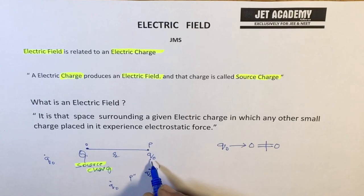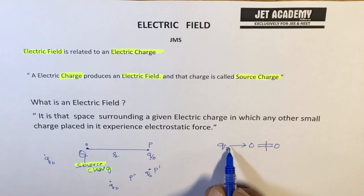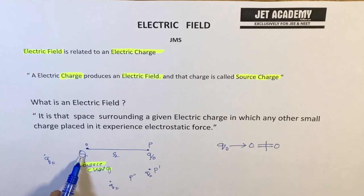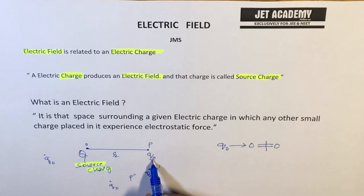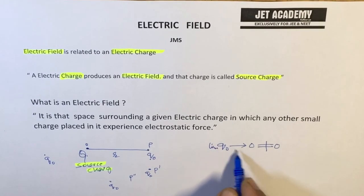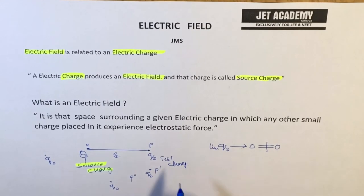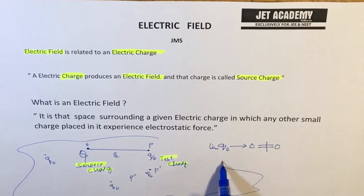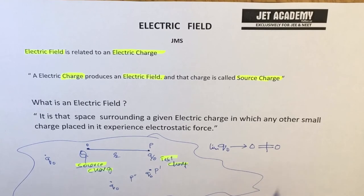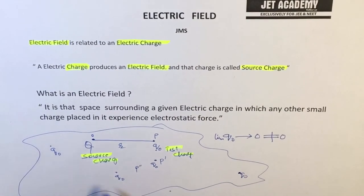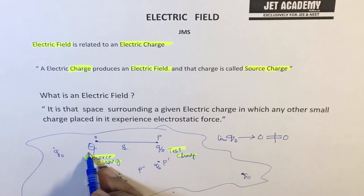Q0 must be a very small charge. Why? Because the presence of Q0 disturbs the electric field produced by the source charge. Because of that, for practical purposes, we consider the test charge should be very small — with its limit tending to zero. This is the test charge. The space surrounding is not limited; wherever you keep a test charge Q0 and it experiences the force due to the source charge, then electric field is present. It is simply a conceptual notation — the space surrounding the source charge is the electric field.